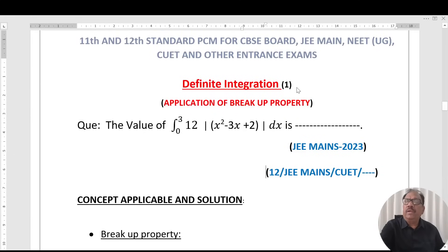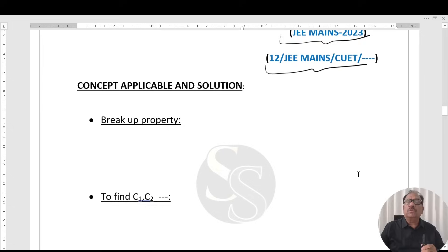The topic is definite integration with application of breakup property. The question is: find the value of integral from 0 to 3 of 12 times modulus of x squared minus 3x plus 2 dx. This question has been taken from JEE Main 2023 and is applicable for CBSE Board, JEE Main, NEET, CUET, and other entrance exams.